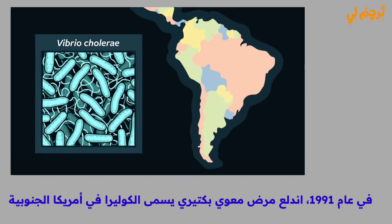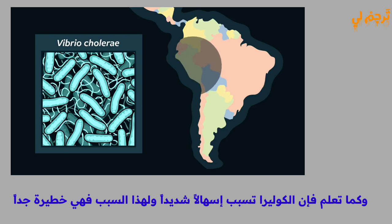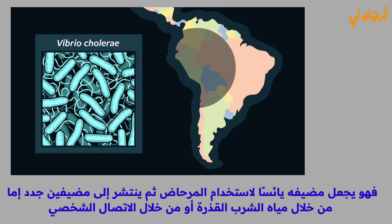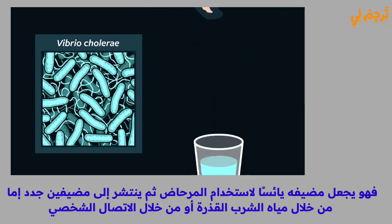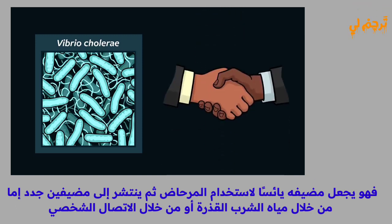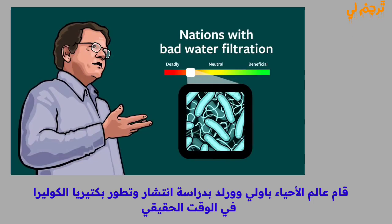In 1991, a bacterial intestinal disease called cholera broke out in South America. As you may know, cholera causes extreme diarrhea — that's why it's so dangerous. It makes its host desperate to use the toilet and then spreads to new hosts either through dirty drinking water or through person-to-person contact. Biologist Paul Ewald studied its spread and the evolution of the cholera bacteria in real time.